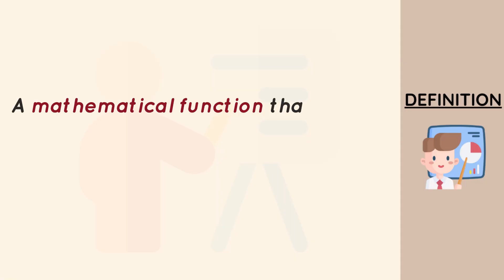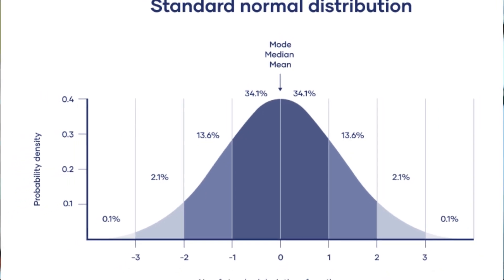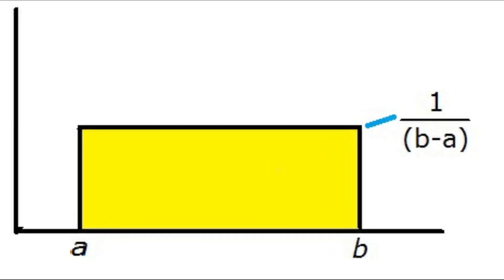For the continuous probabilistic distribution, it results from several continuous random variables coming together. The mathematical function that defines it is known as a probability density function, or PDF. Popular examples of continuous distributions include the normal distribution, the exponential distribution, the uniform (also known as the rectangular) distribution, and the triangular distribution, just to mention a few.